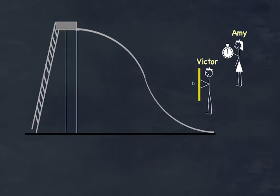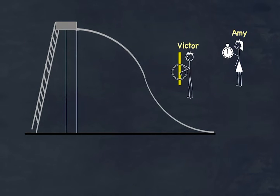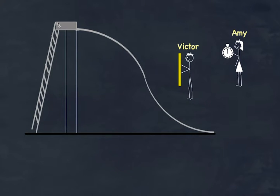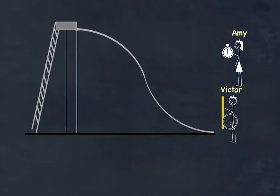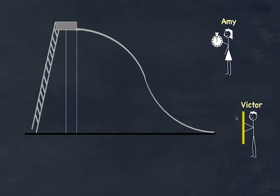Victor measures how much Freddy drops going down the slide. Clearly, the values he gets will be exactly the same — with one minor difference. When measuring the climb, he's measuring energy gained, so he might get a value of 10. On the drop side, it's still 10, but it would be negative 10, because it's a loss of energy, not a gain.